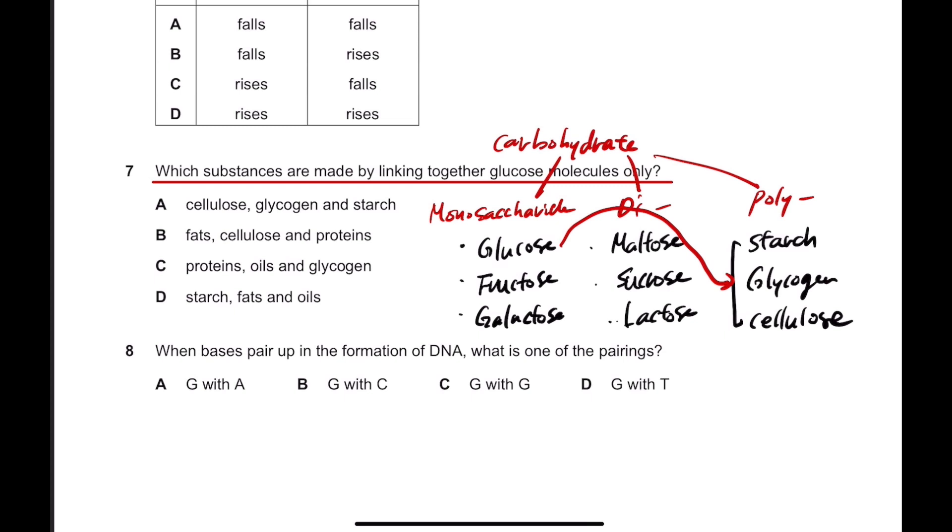So maltose is actually made of two glucose molecules. Sucrose is made of glucose and fructose molecule. Lactose is made of glucose and galactose molecule.